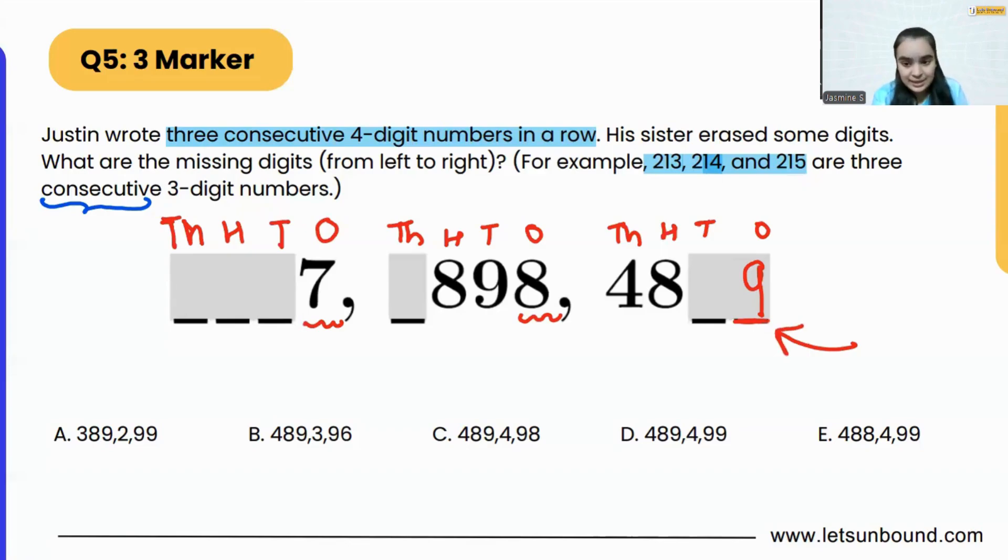That means we can eliminate the options which are not ending with 9. That is option number B because it is ending with 6. So bye-bye B. And we can also eliminate option C because it is ending with 8, not 9. So that is also eliminated. Now we are left with A, D, and E options.